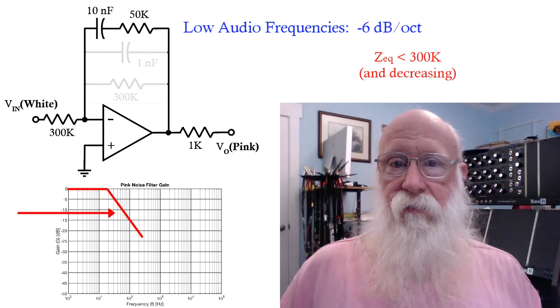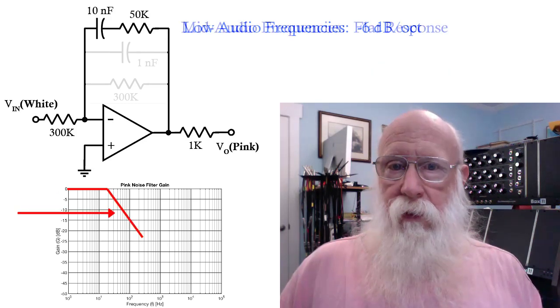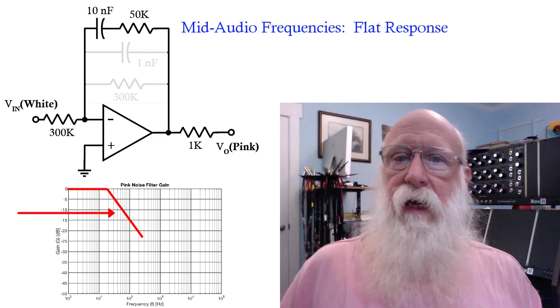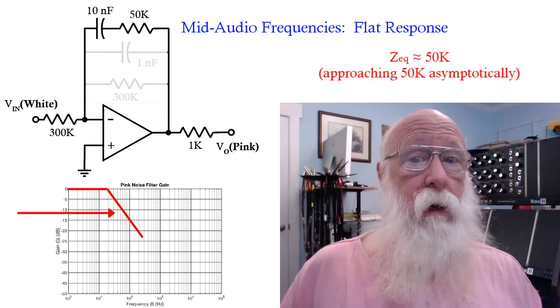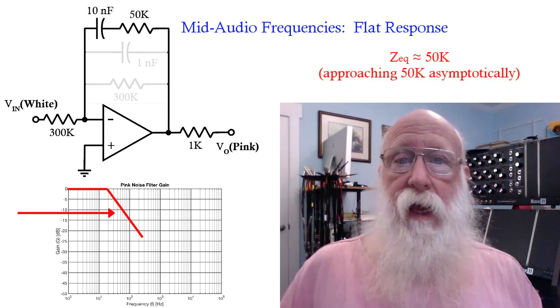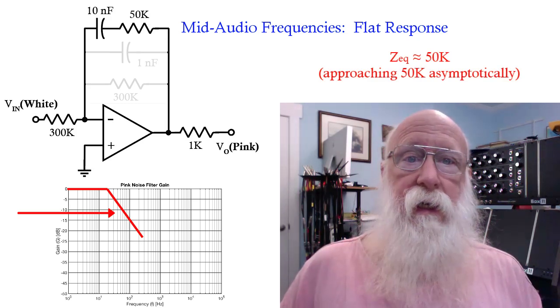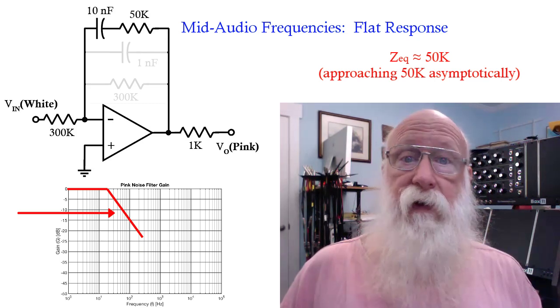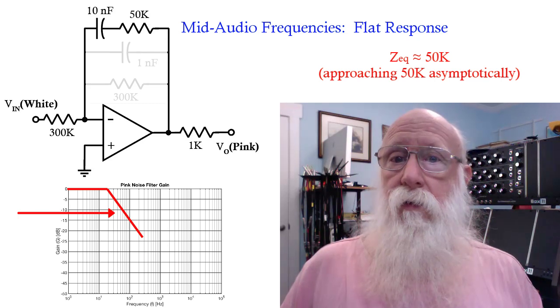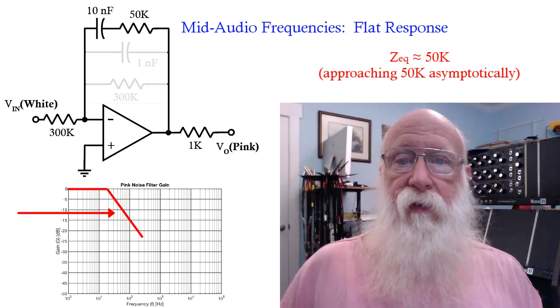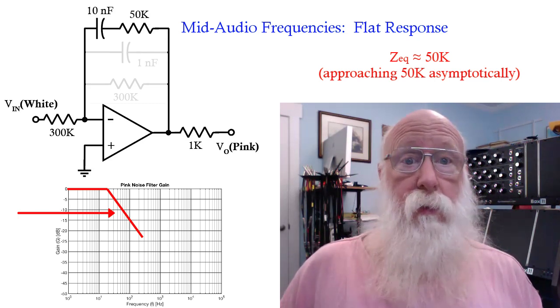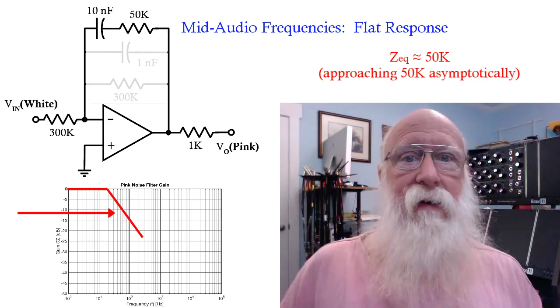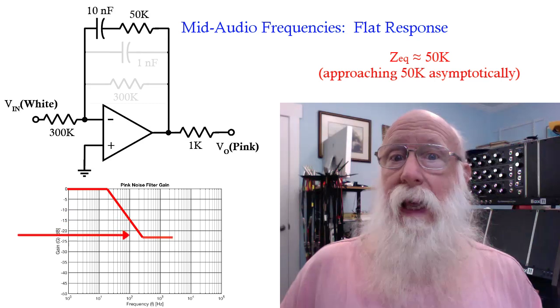At mid frequencies, say in the hundreds of hertz, the impedance of the 10 nanofarad is getting fairly close to the 50K resistor. And although it keeps decreasing, it's heading asymptotically toward 50K, so it's not changing very much. The other two impedances are considerably larger than that. So since the smallest is still that 10 nanofarad 50K combination, and it's not changing much, the response flattens out.